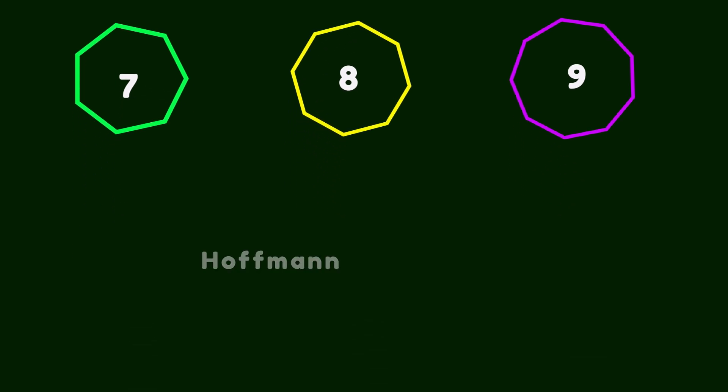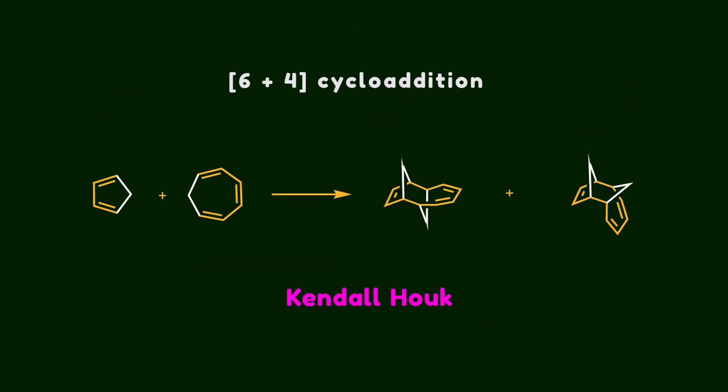In 1965, Hoffmann and Woodward classified these reactions based on their electronic characteristics, opening the door for expanding the scope beyond six electron processes. Shortly after, Woodward proposed that Houk should explore the 6+4 cycloaddition of cyclopentadiene with cycloheptatriene, an idea that helped establish the concept of higher-order cycloadditions.